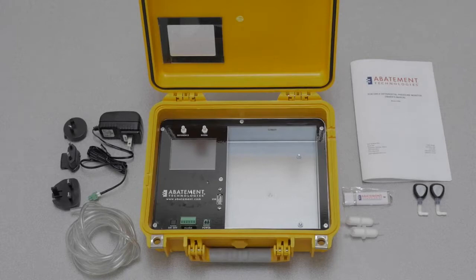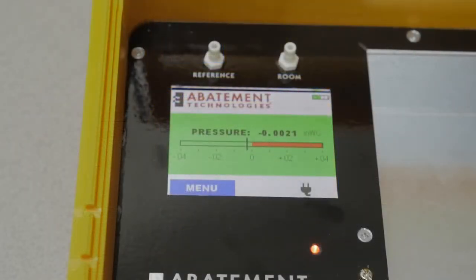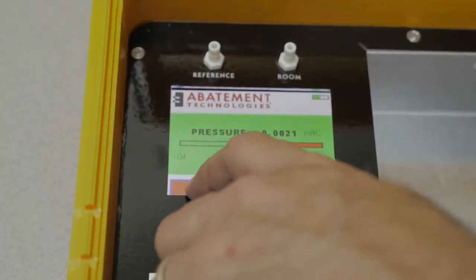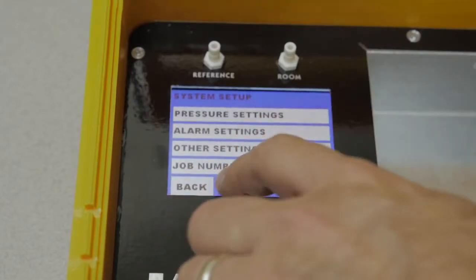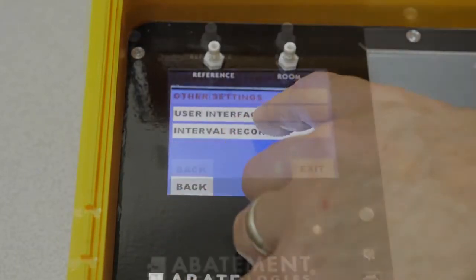The PPM3 Portable Differential Room Pressure Monitor from Abatement Technologies measures and records negative and positive pressure differential for construction and renovation projects.